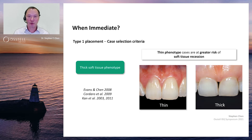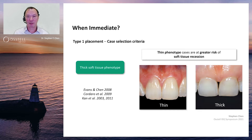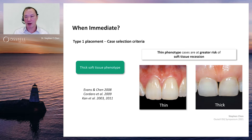The risk factors associated with soft tissue recession with immediate implants are as follows. The first is the soft tissue phenotype. Thin phenotype cases are at greater risk of soft tissue recession than thick phenotype cases. Recession can still occur with thick phenotypes if the implant is malpositioned or if there is a dehiscence of the facial bone plate, but the chances are much greater with thin soft tissue phenotypes.